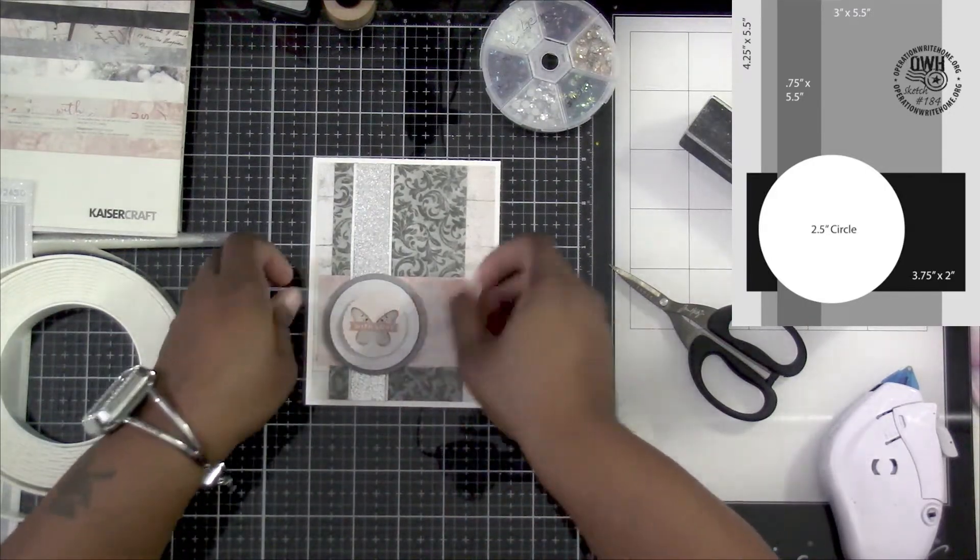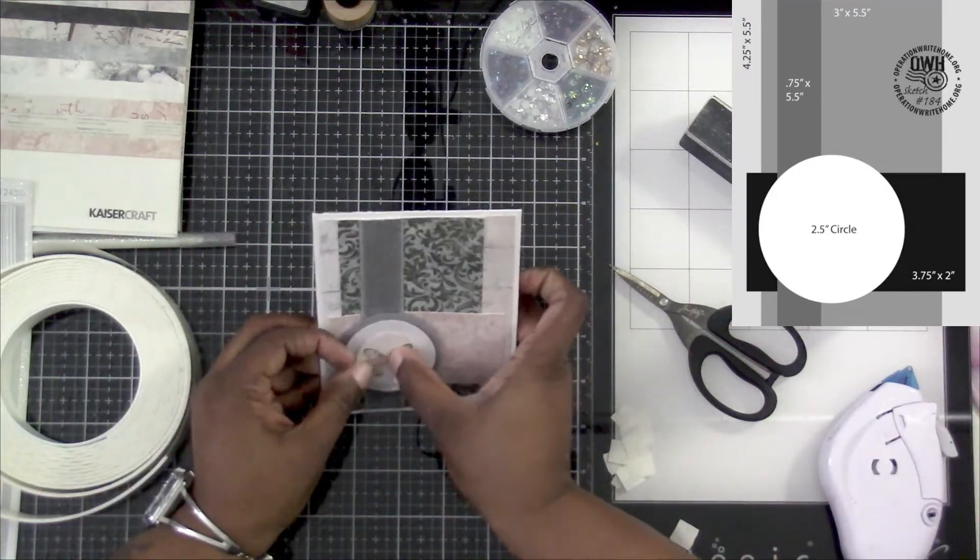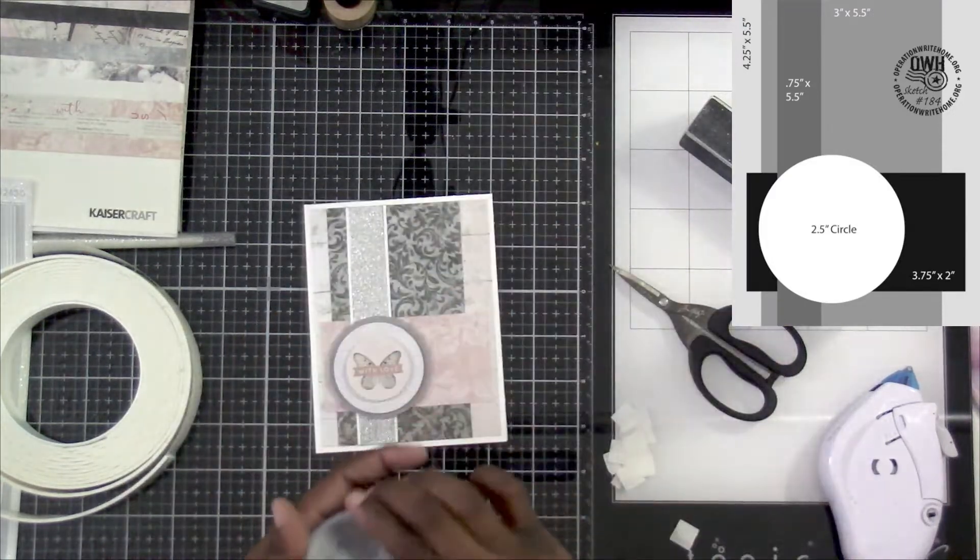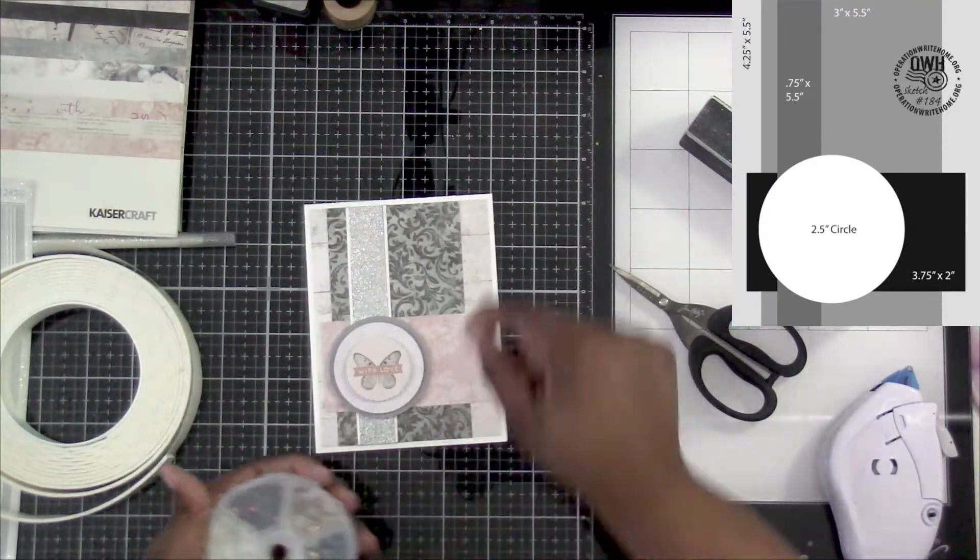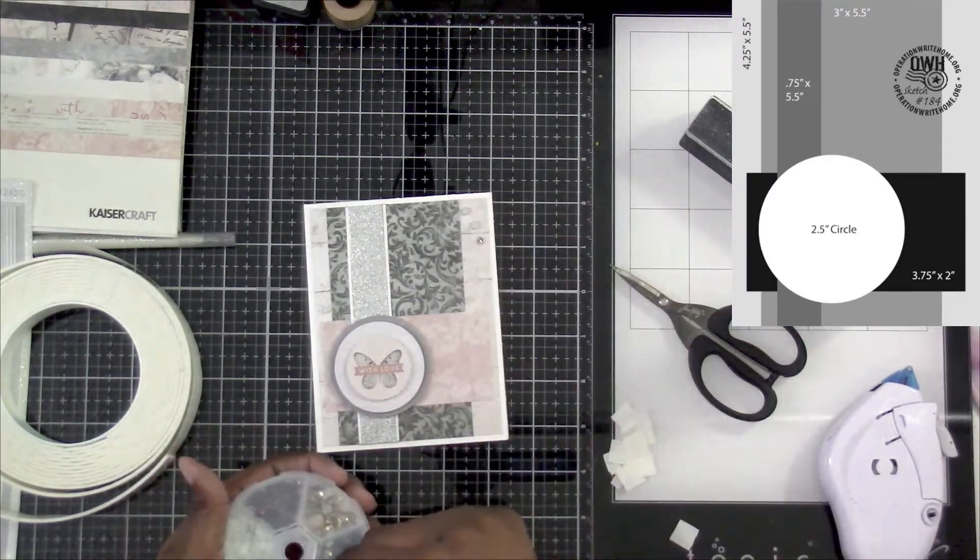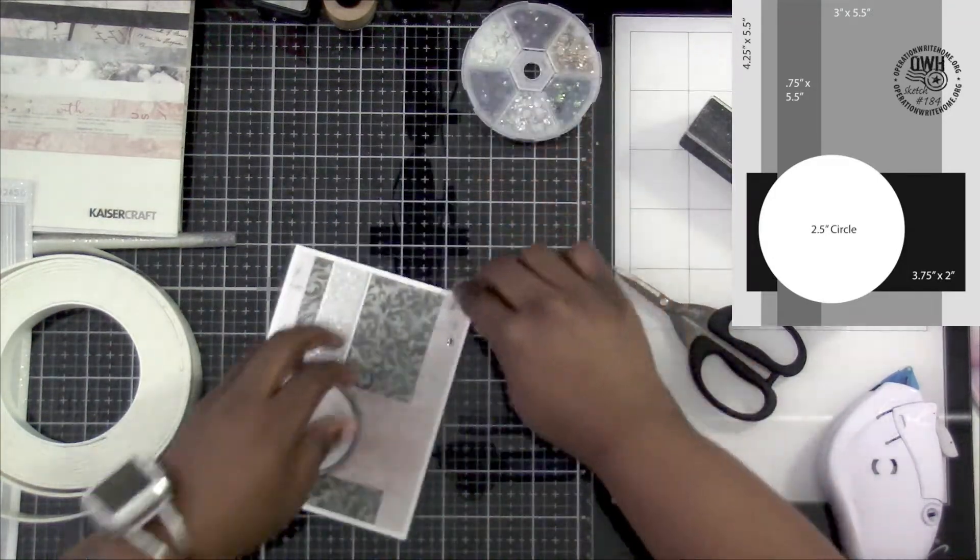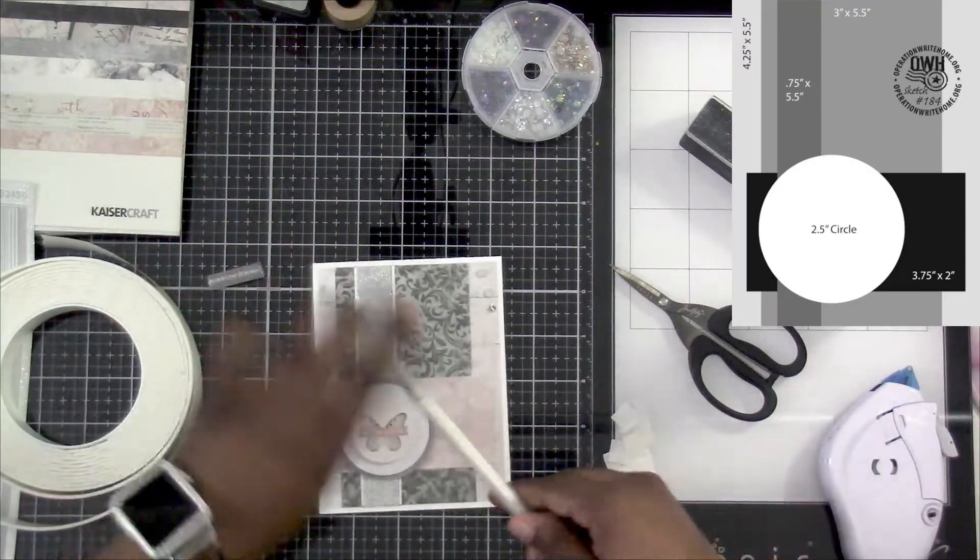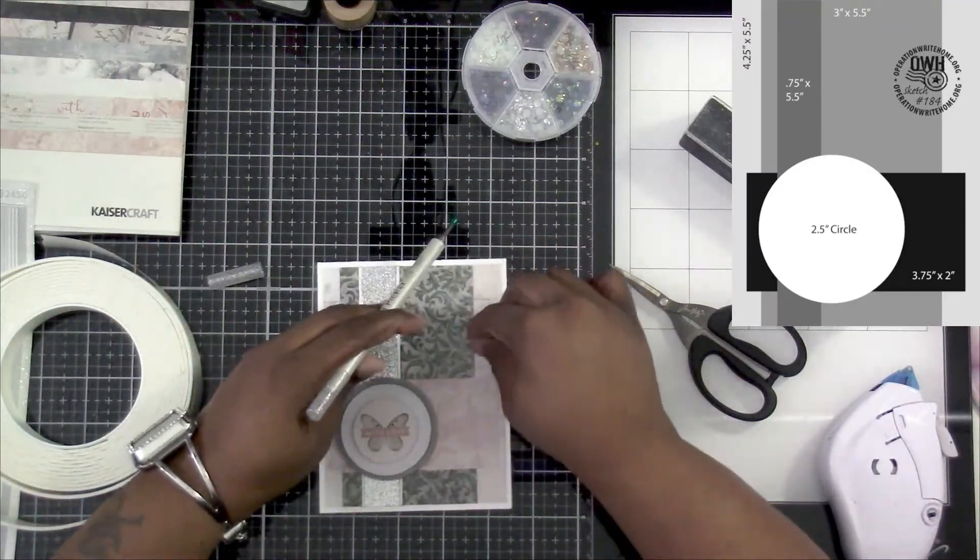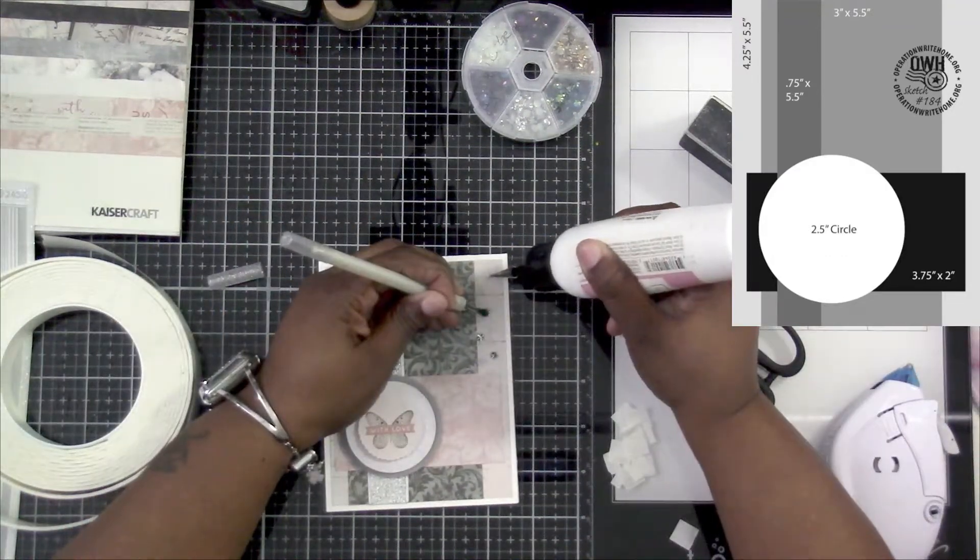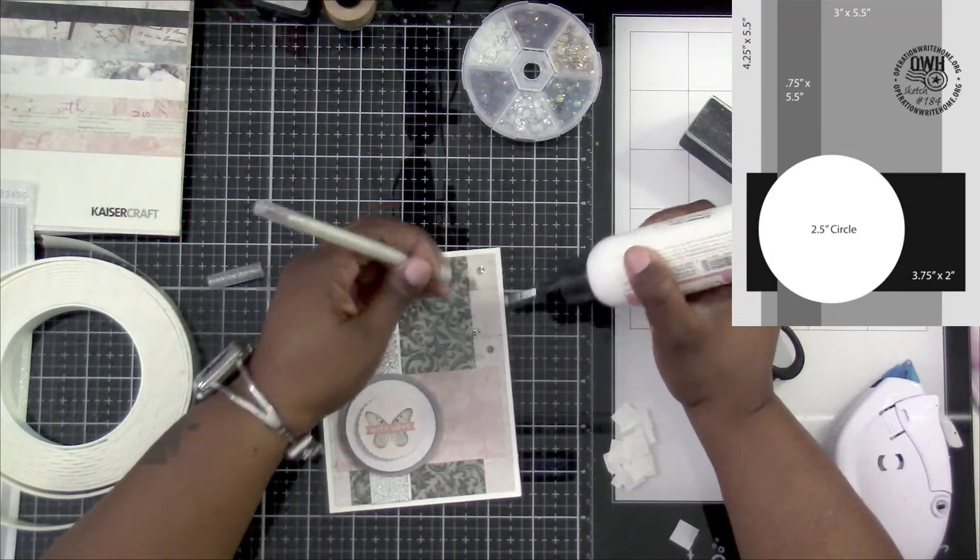Make sure the butterfly is straight, hold it up a little bit and then press it down. And then we're gonna grab some of the silver gems from the pink and main, grab my pickup tool and my glue, and we'll put these down real quick.